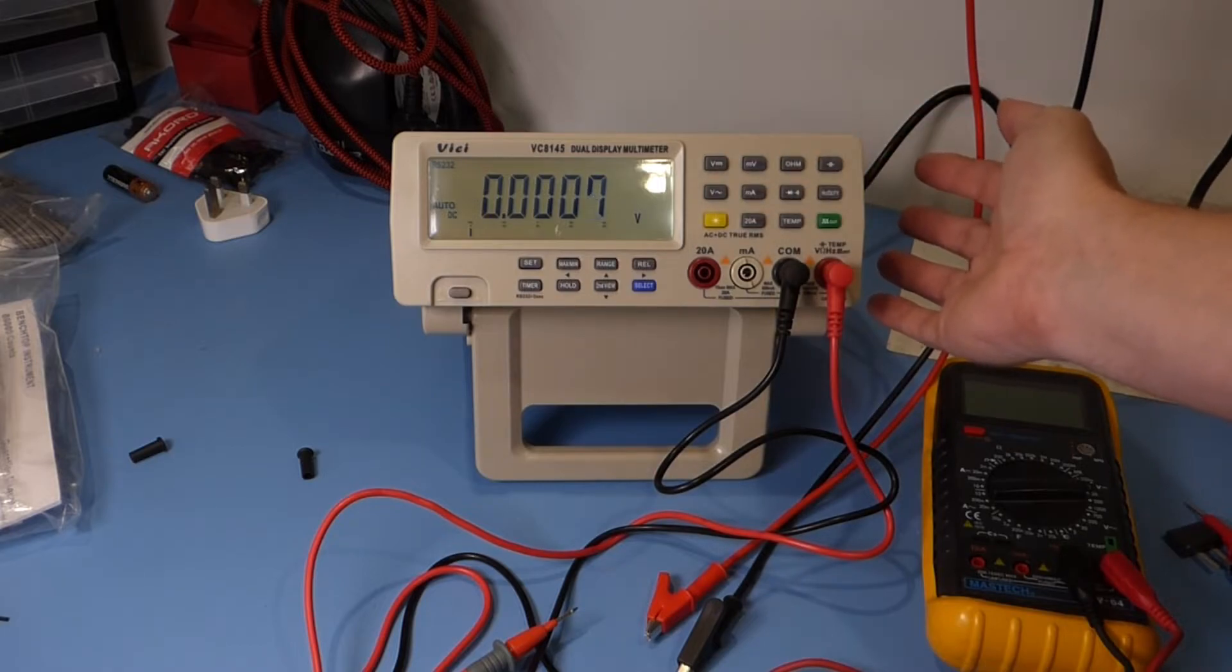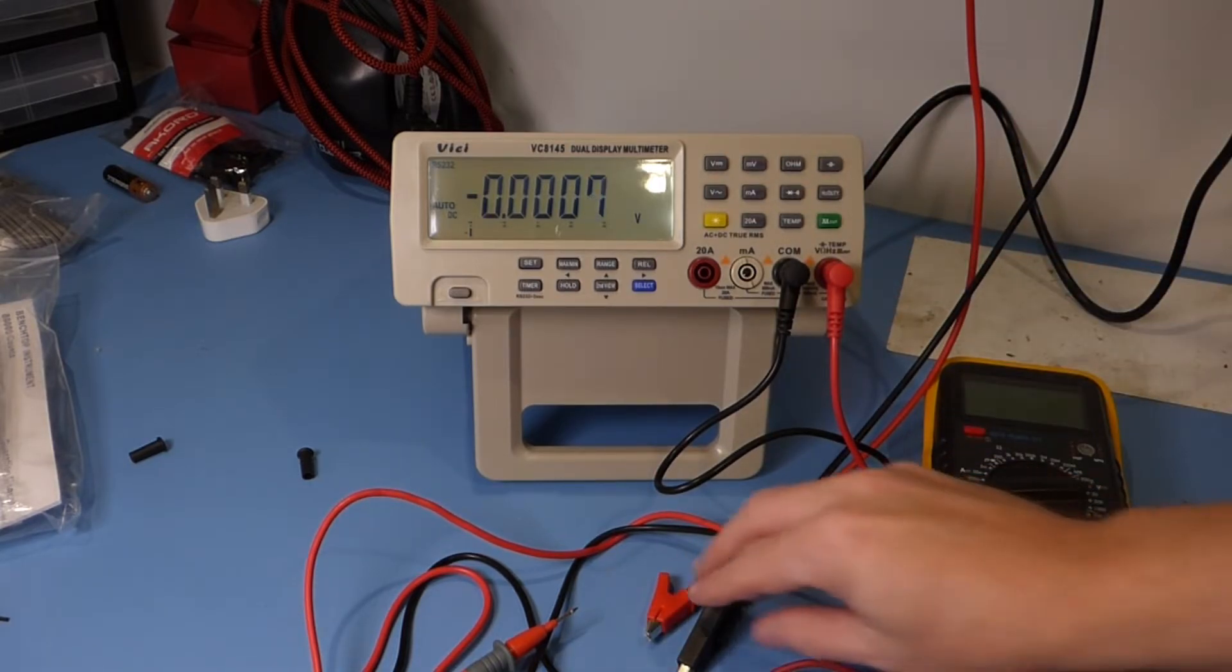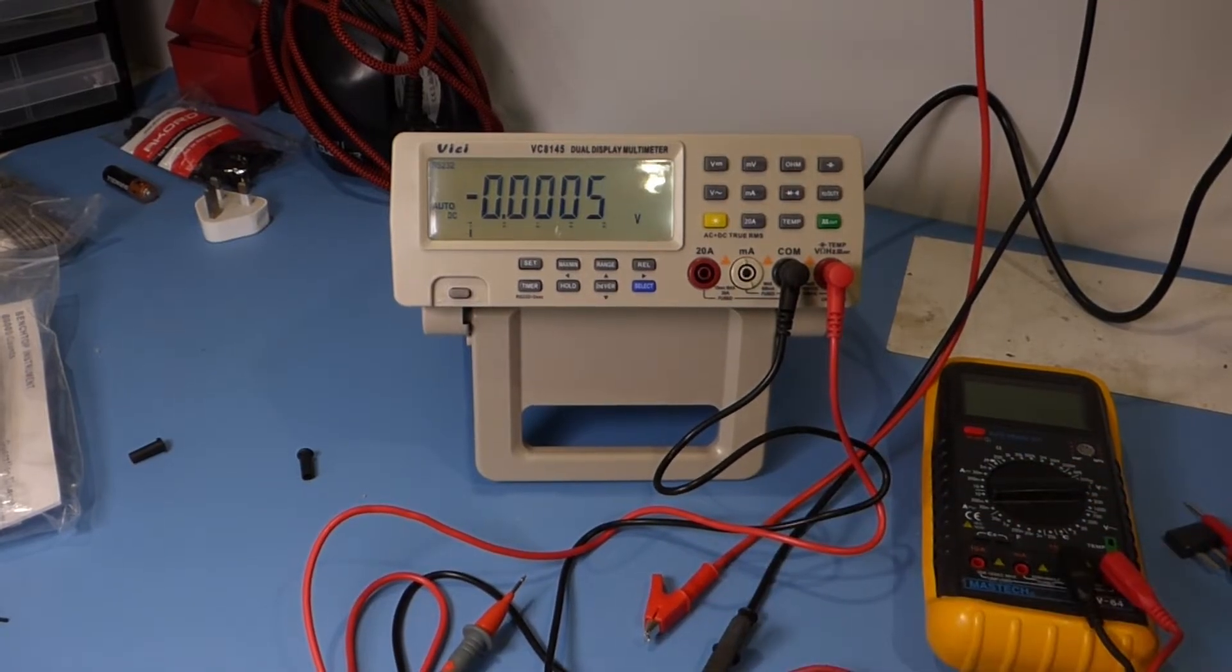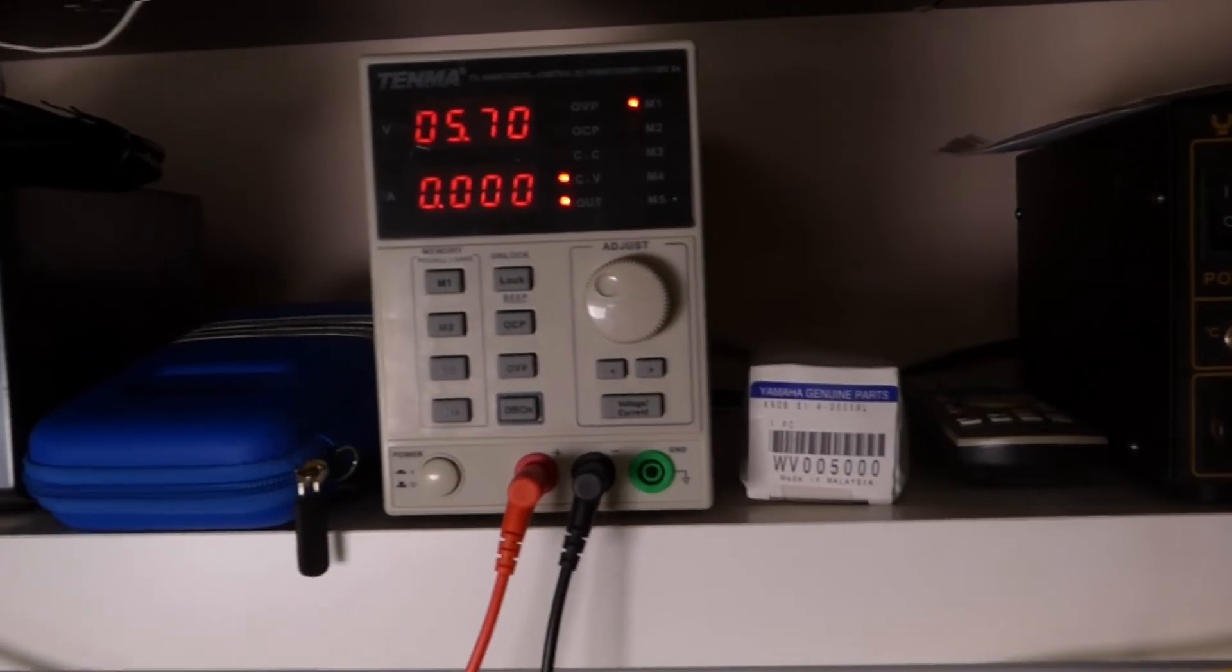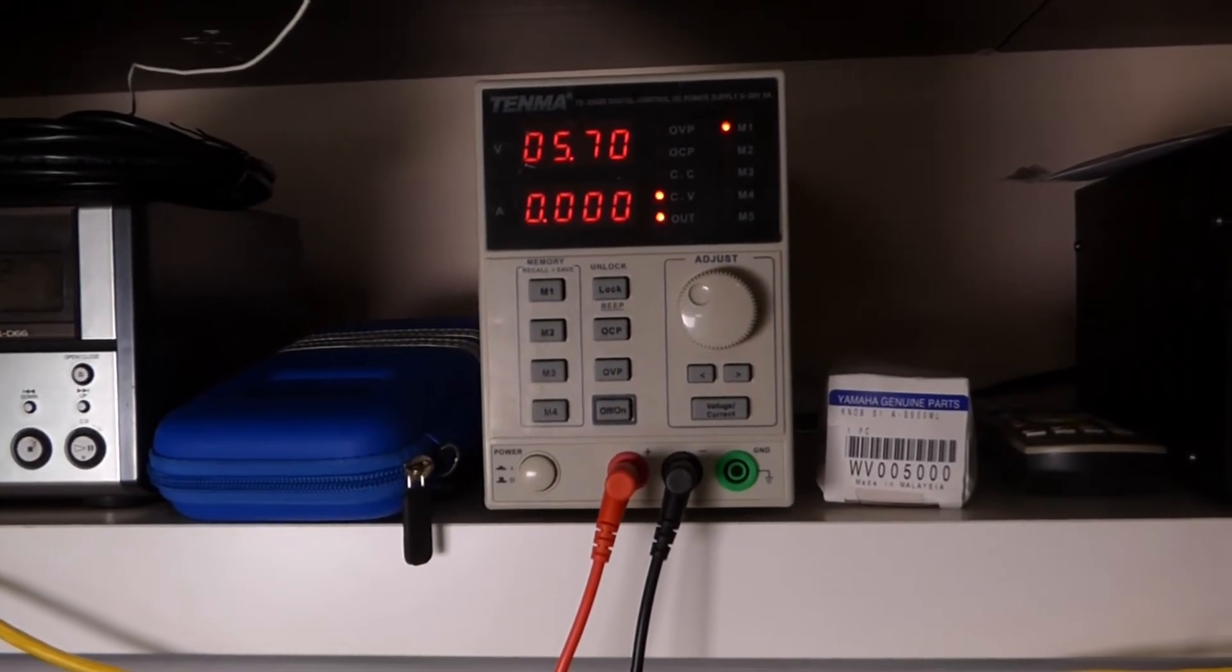It's backlit, not quite sure how that looks on the camera but in real life it looks okay. So we're just going to connect a load to it from my power supply. As you can see it's set at 5.7 volts currently, and it's reading pretty much 5.7 give or take.